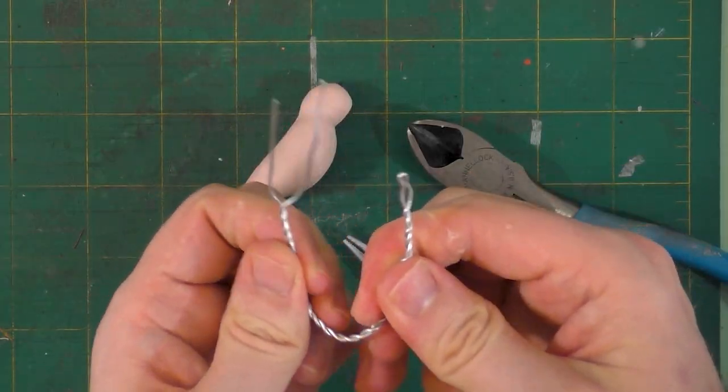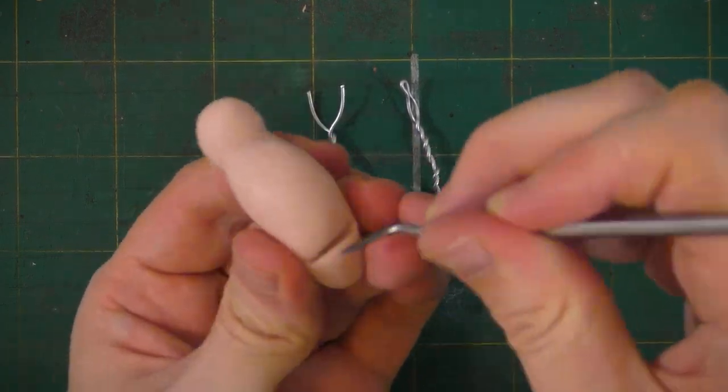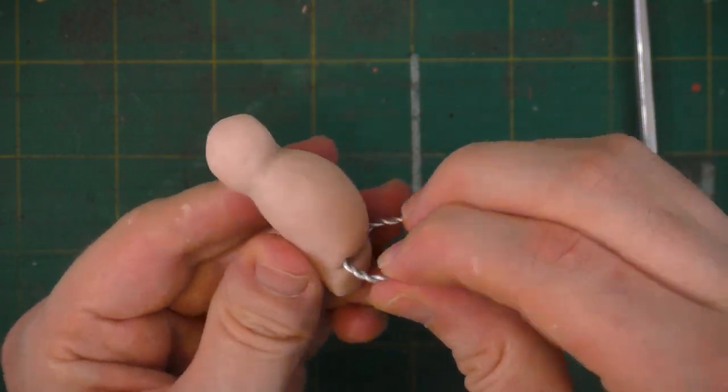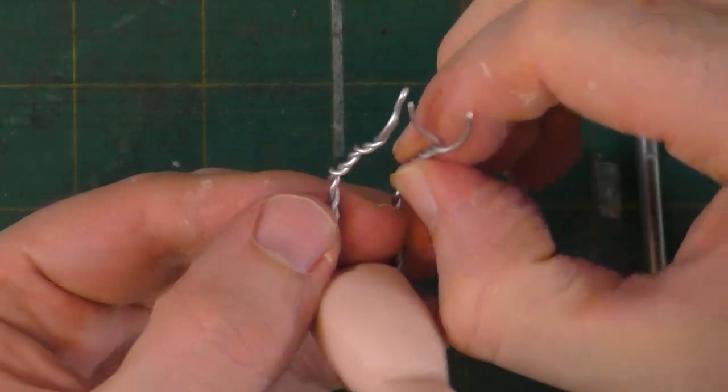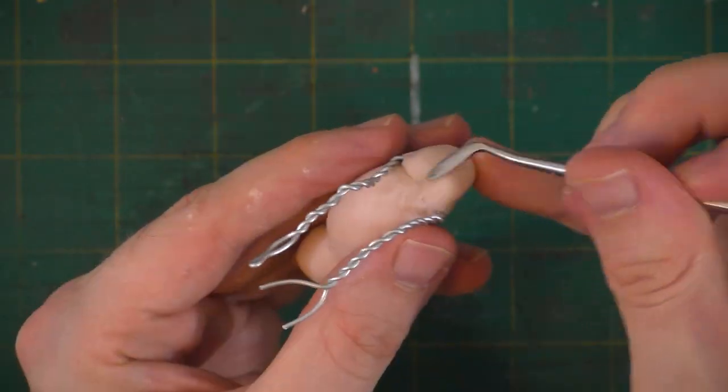We'll just bend it into a u-shape and snip off some excess wire. Now we'll just take our clay tool and cut a little cavity for the bird's legs to go into. By bending the leg wires at about the halfway point, we'll create a leg joint. Then I'll just blend the polymer clay over the wire.